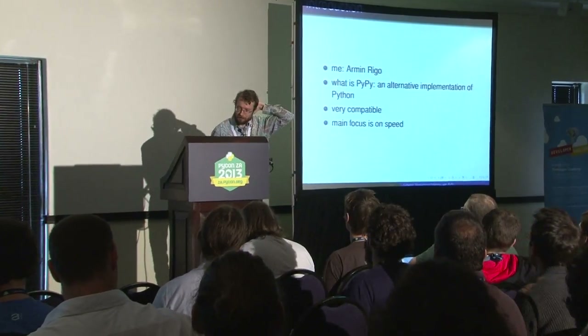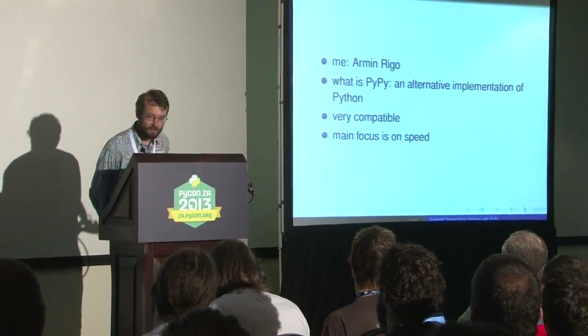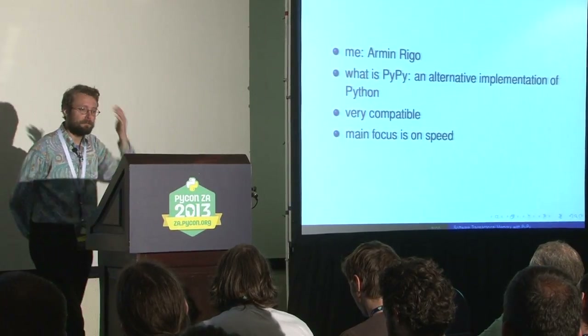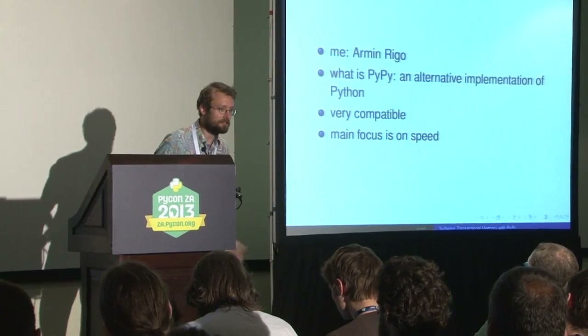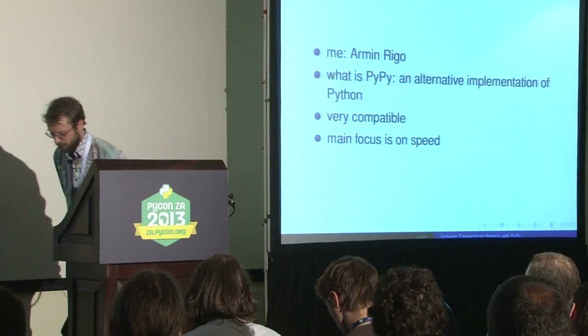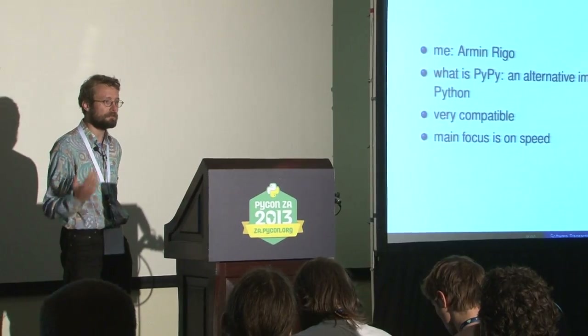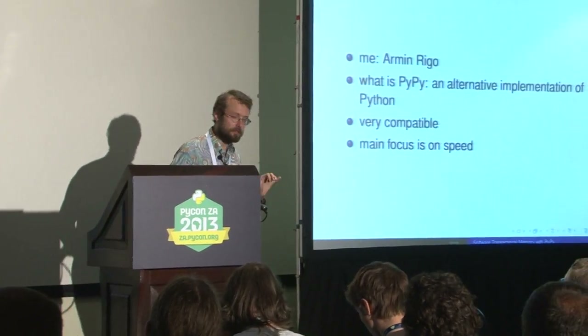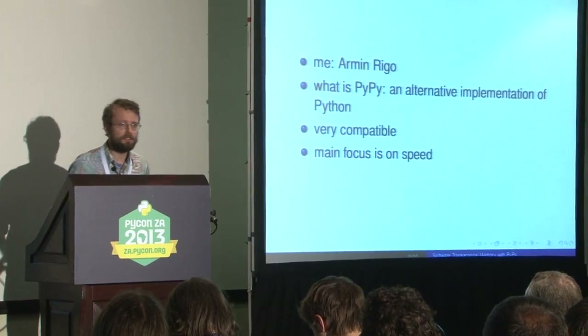I'm Henry Goh. You probably already saw me yesterday for the CFFI lightning talk. I'm a core contributor of PyPy. PyPy is an alternative implementation of Python — basically another Python interpreter — whose aim is to be very compatible with the standard Python, which we call CPython. But it has a main focus on speed. It includes crazy things like a just-in-time compiler, a good garbage collector, and so on.